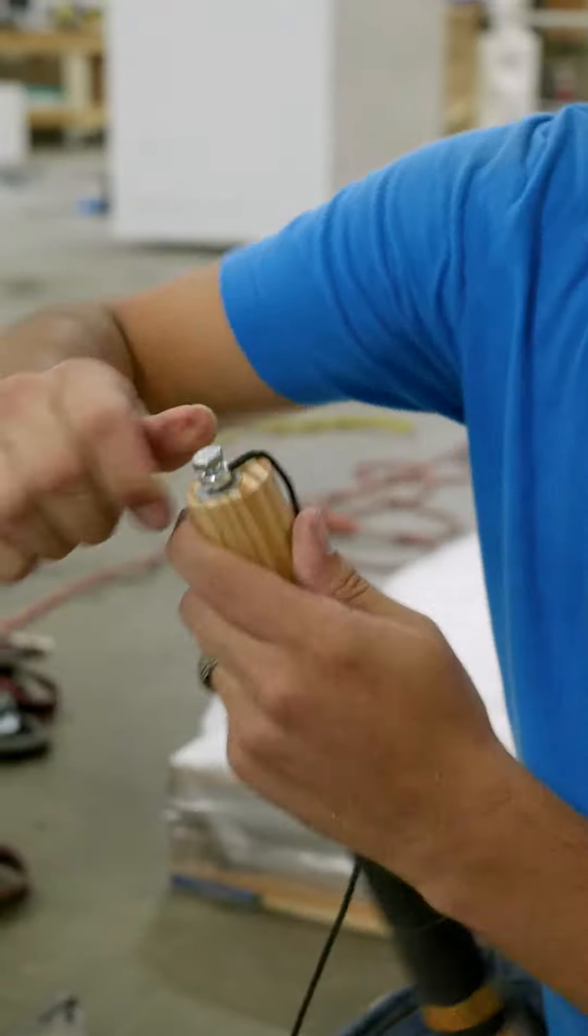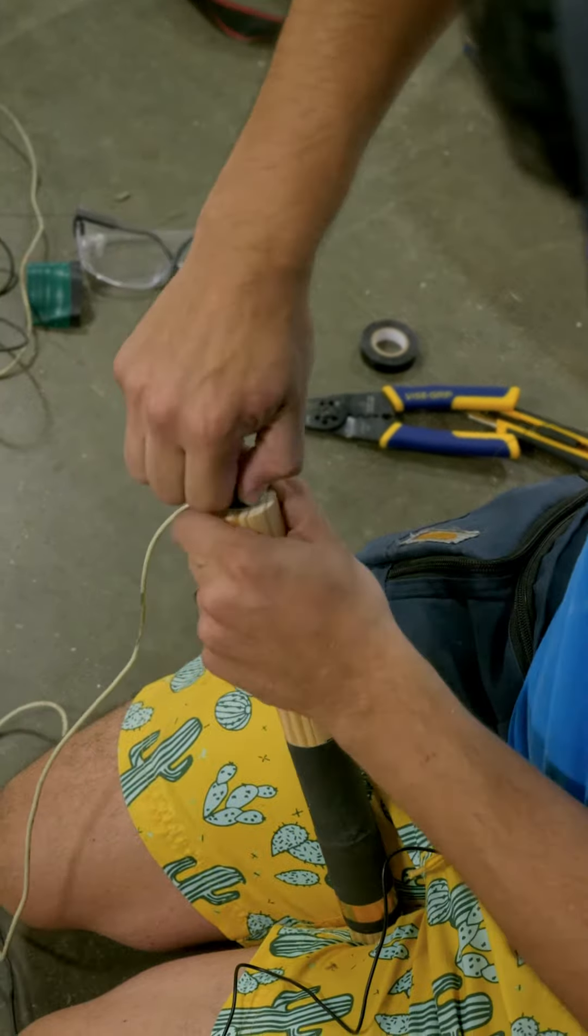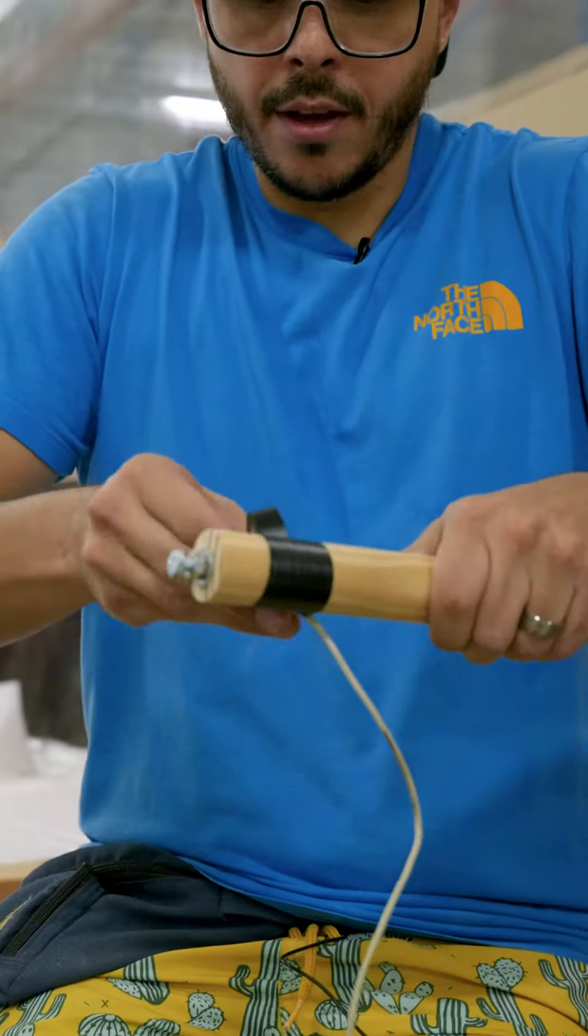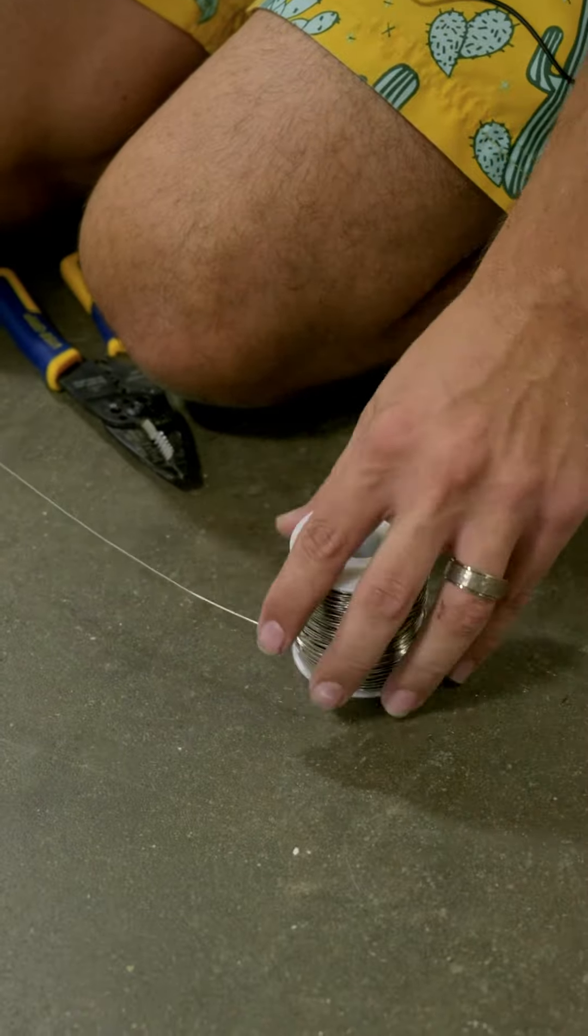So you have two wires, positive and negative. Each is going to one of these bolts and that will in turn send electricity through this wire. This wire will get ultra hot and that's how we slice through that foam.